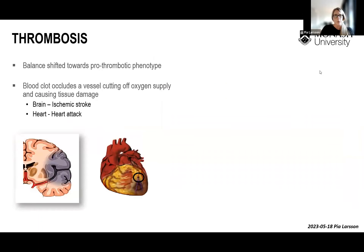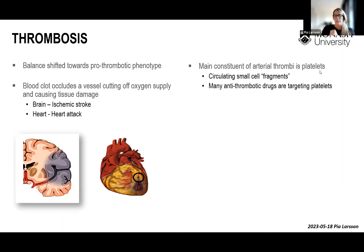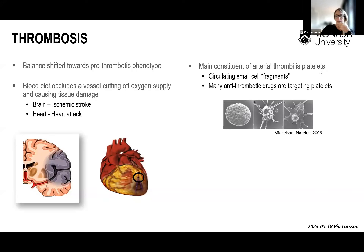Thrombosis occurs when this balance has shifted towards a more pro-thrombotic phenotype. When this happens, the blood clot formed in a damaged blood vessel grows too large and eventually occludes that vessel, cutting off oxygen supply to downstream tissues and causing tissue damage. If this happens in the brain, it causes an ischemic stroke; if it happens in the heart, it can cause a heart attack. The main constituent of these so-called arterial thrombi is platelets — circulating small cell fragments about two to four microns in diameter in humans, and one to two microns in mice.